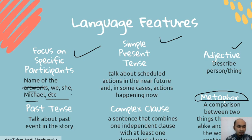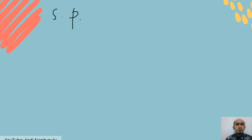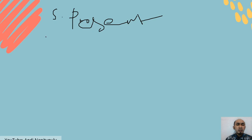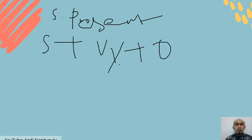Now let's discuss simple present tense in more detail. Why do we write reviews using simple present tense? Because it expresses what's happening now — your feelings right now. The formula is: subject + verb 1 + object, or with -s/-es added.